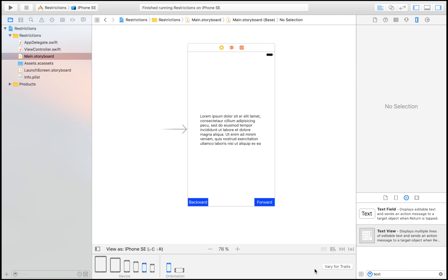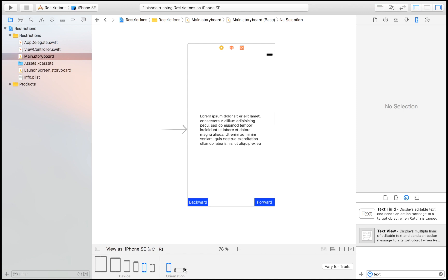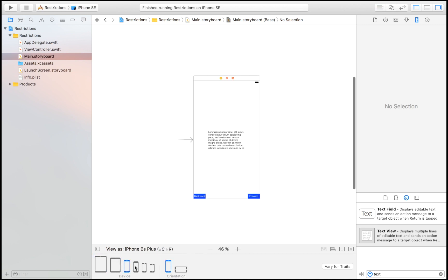Apple has introduced a size class table showing which category each device fits into. There are four categories. The first is Regular/Regular, which is an iPad in both portrait and landscape. Then Regular/Compact, which is iPhone in portrait. Then Compact/Compact, which is iPhone in landscape. And finally Regular/Compact — which in this context is the iPhone 6 Plus in landscape. Interestingly, the iPhone 6 Plus in landscape is the only device in that last category. Our constraints already make everything look great on any device.